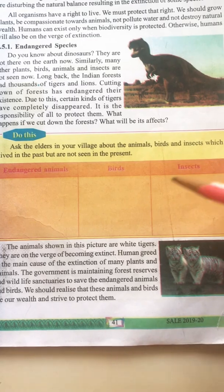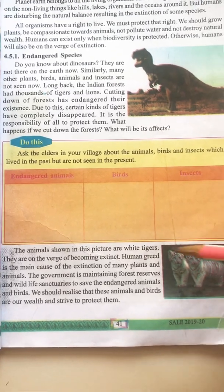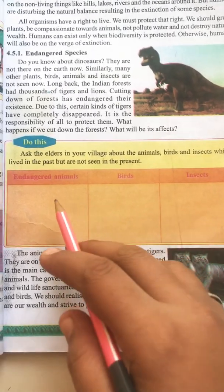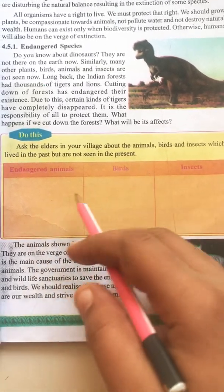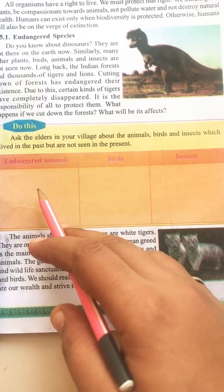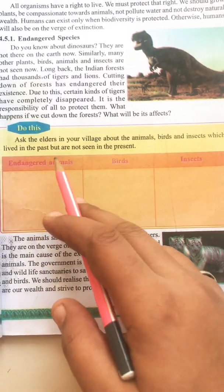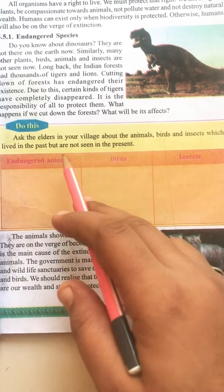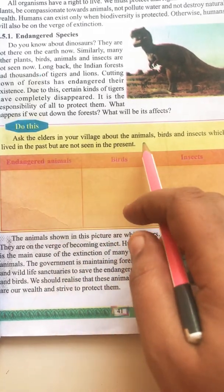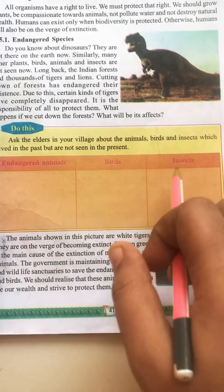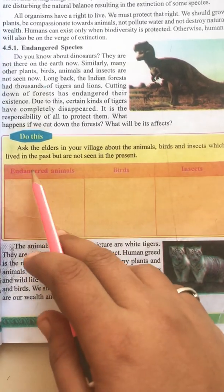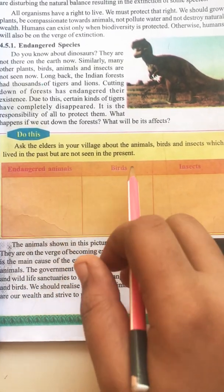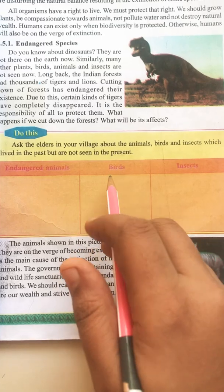There is a table. Write down your answers. Ask your elders in your village about the animals, birds, and insects which lived in the past but are not seen in the present.